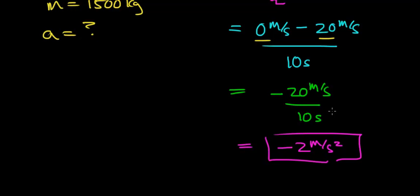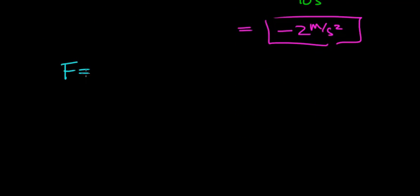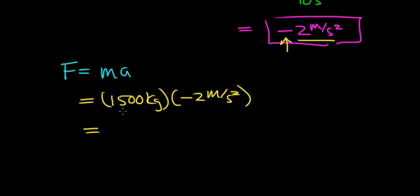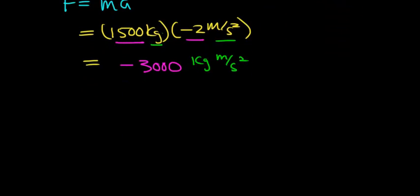Now that we know the acceleration of the car, we can figure out the force required to stop it. Applying Newton's second law, the sum of forces equals the mass times the acceleration: 1,500 kilograms multiplied by negative 2 meters per second squared. 1,500 times negative 2 works out to be negative 3,000, and a kilogram times meters per second squared is a Newton, so we can rewrite this as negative 3,000 Newtons of force are required to stop this car.